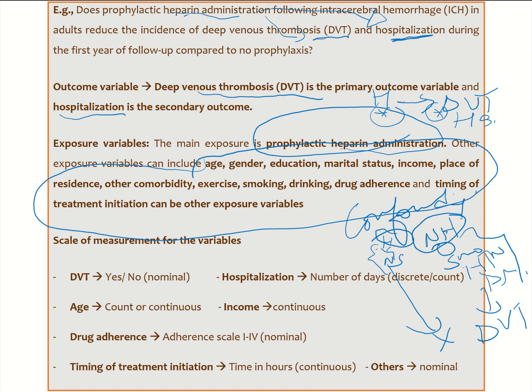So if we want to get the pure effect of heparin administration on the development of DVT and hospitalization, we should be able to control all potential confounder variables that could distort the relationship between the two. We have to include as many confounder variables in our study as we can so that we can get the pure effect of heparin administration on our outcomes.